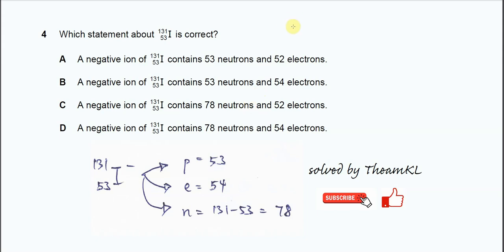Question 4. Which statement about iodine-131 is correct? So for this answer, because they are all negative ions of iodine, so most likely it will be iodide. Because iodine is group 17, it's most likely to get one electron.